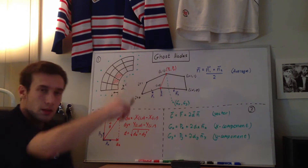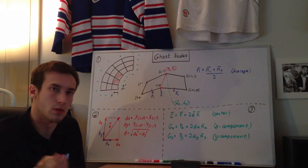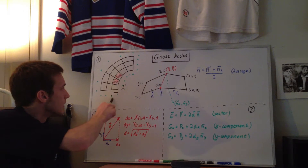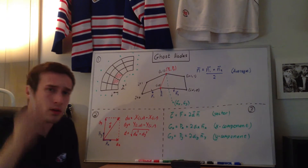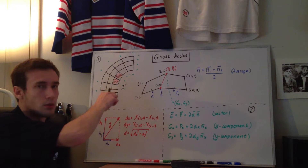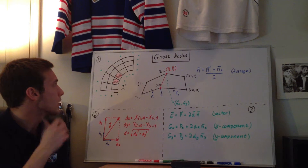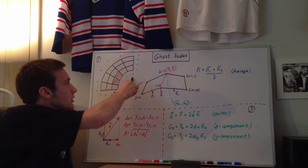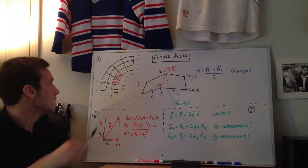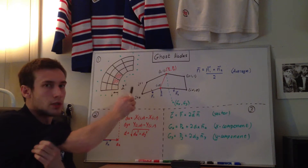So the black thing is your grid. This is a curvilinear grid, the same grid I used for the previous video on normal vectors. And these green x's around here are ghost nodes. They're called ghost nodes because they're not physically inside the grid — they're outside of the grid boundary. We want to calculate where these ghost nodes are, and we're going to do that based off of the boundary normal vectors, which I described in that other video.